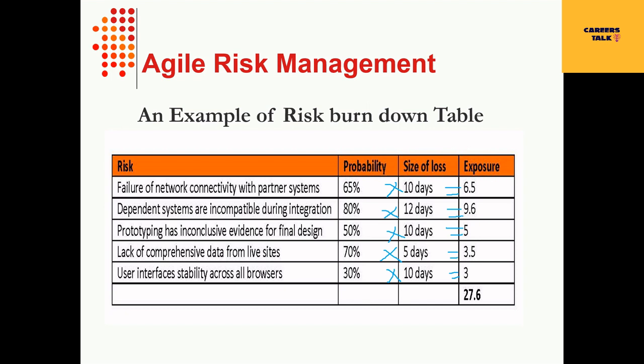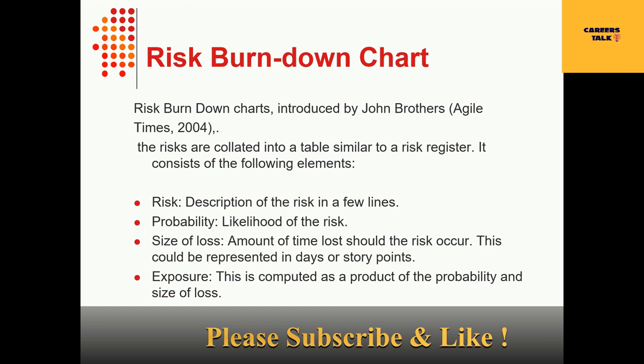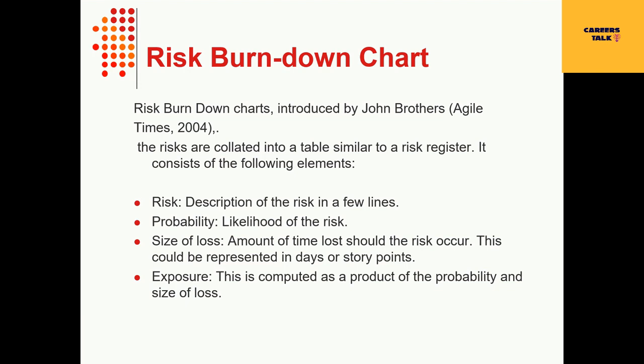Exposure is the product of probability and the size of loss or impact. The risks are collated into a table similar to a risk register. The table includes: the risk description, probability — the likelihood of the risk — size of loss, which is the amount of time lost should the risk occur (represented in days or story points), and exposure, which is calculated as the product of probability and size of loss.